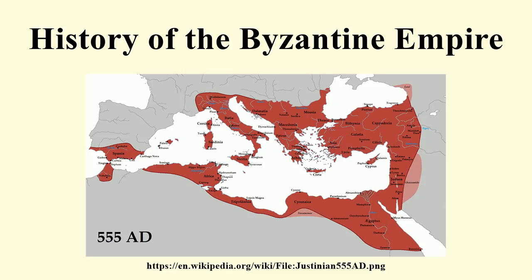During the 6th and 7th centuries, the empire was struck by a series of epidemics which would greatly devastate the population, contributing to a significant economic decline and weakening of the empire. After Justinian died in 565, his successor Justin II refused to pay the large tribute to the Persians. Meanwhile, the Germanic Lombards invaded Italy. By the end of the century only a third of Italy was in Byzantine hands.